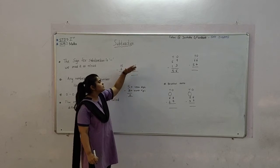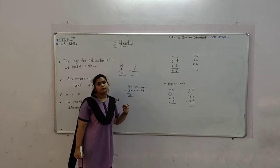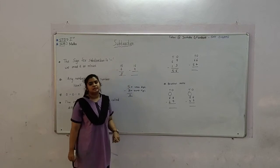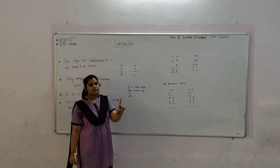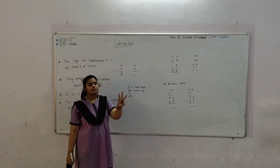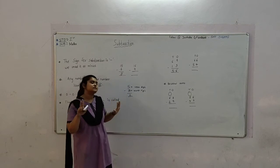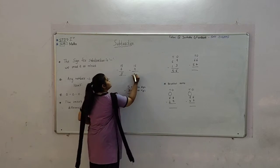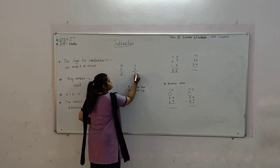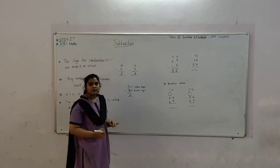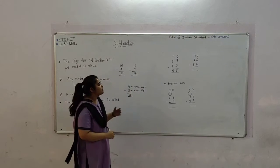Next, keep 9 in your mind and count up to 16. 9, then 10, 11, 12, 13, 14, 15, 16. So 7 is the difference.